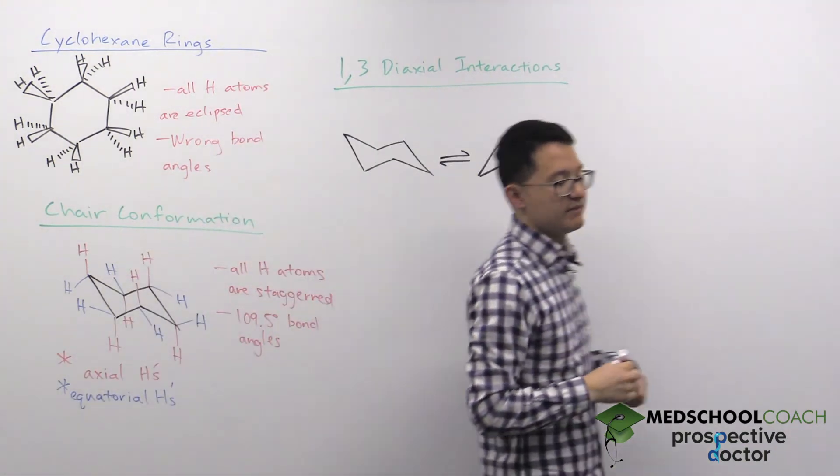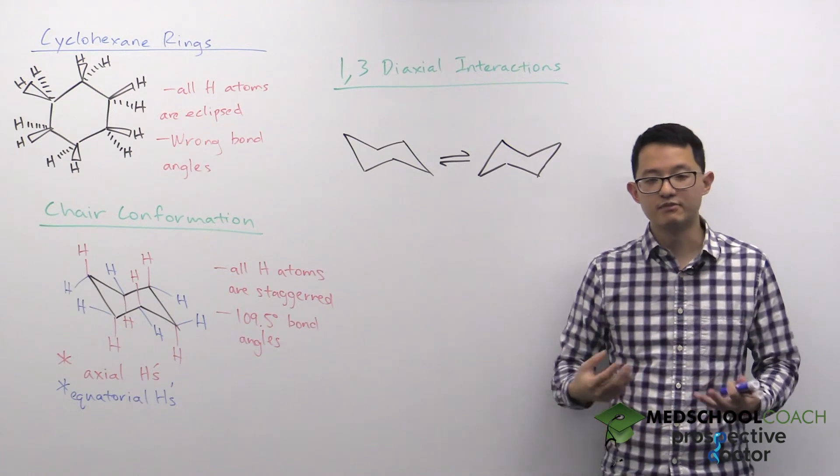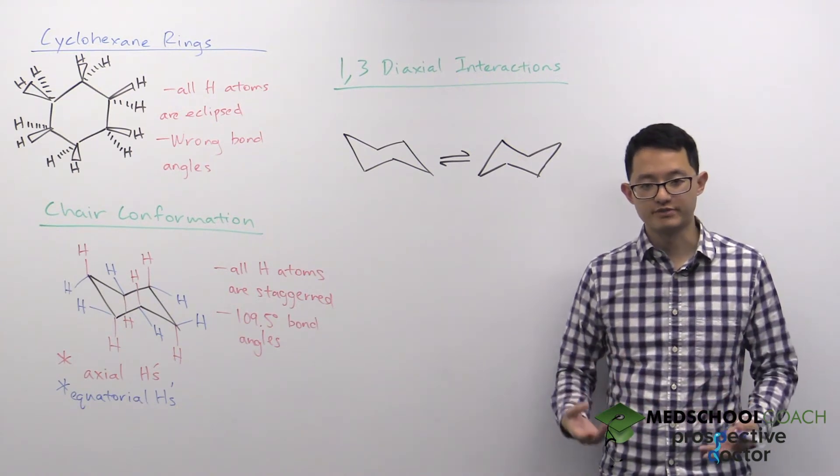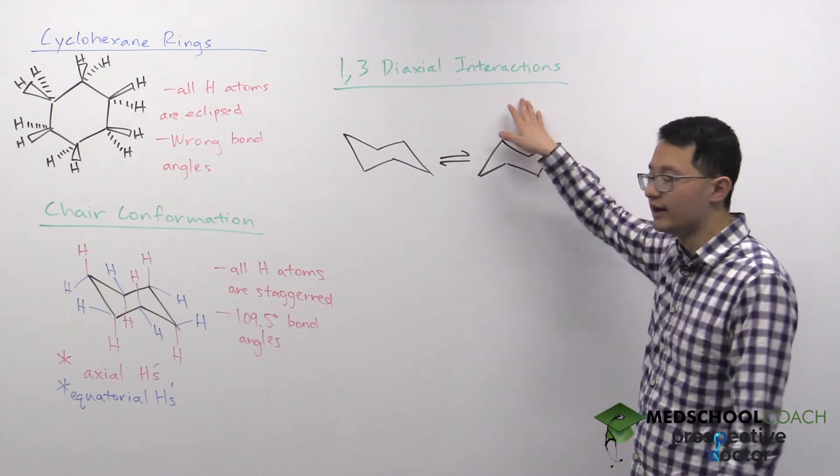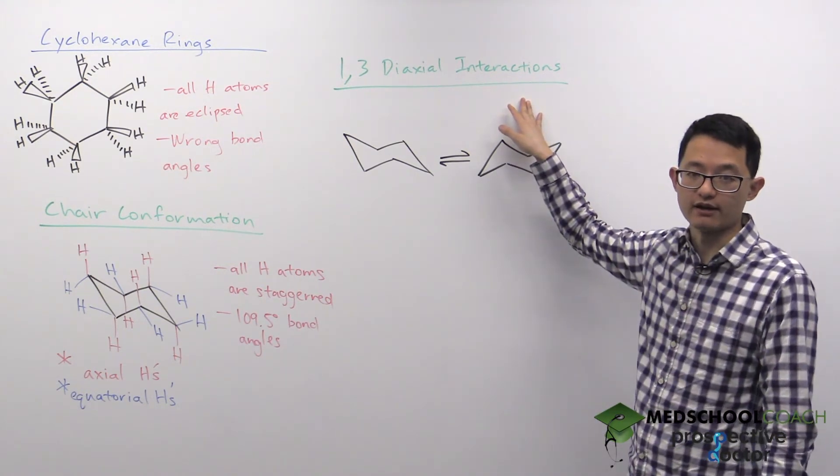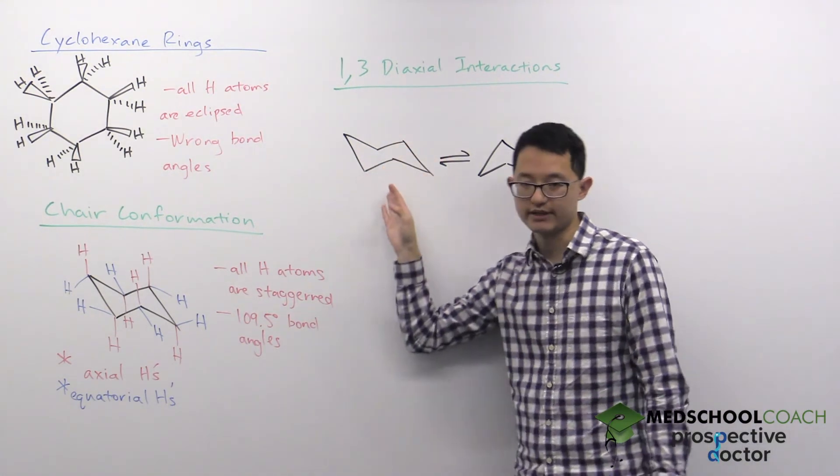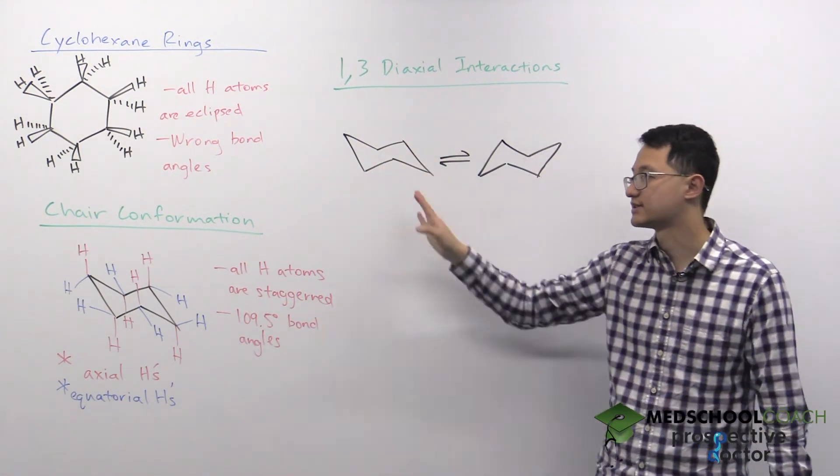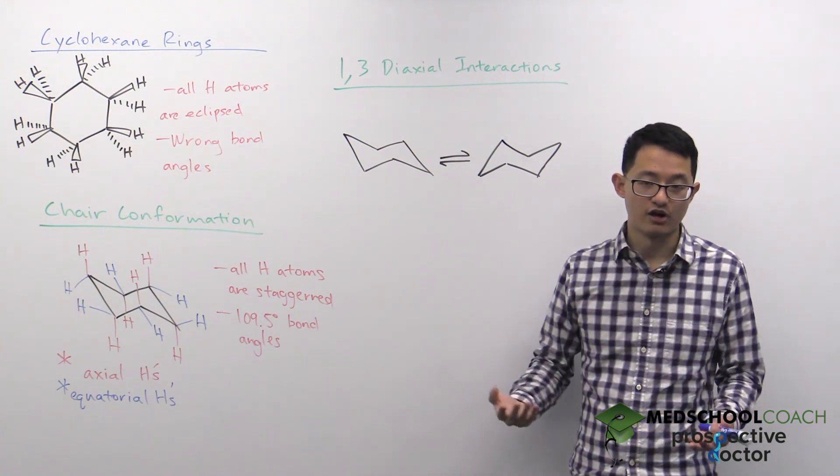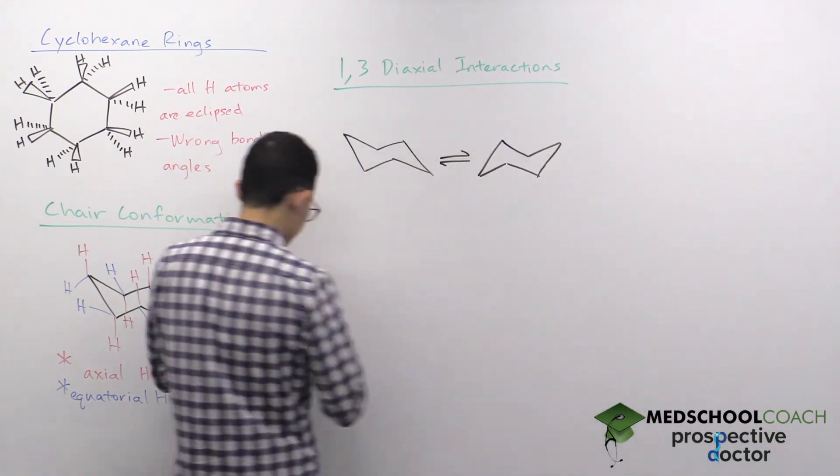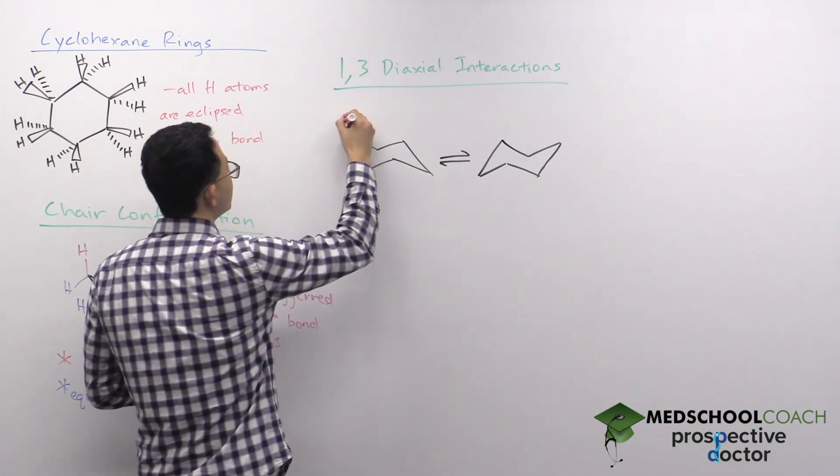This is important because there is a concept related to the stability of large substituents on cyclohexane rings, and it's about 1,3-diaxial interactions. If I have this cyclohexane ring with just six hydrogens, it doesn't really matter where the hydrogens are. However, if you were to add a large substituent, for instance a methyl group, and the methyl group is axial...